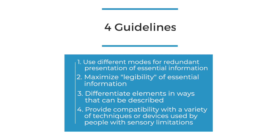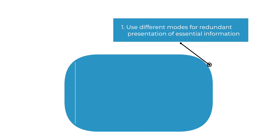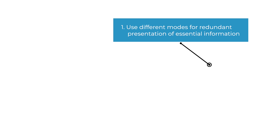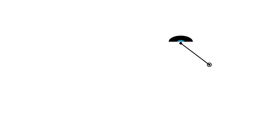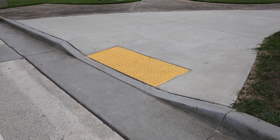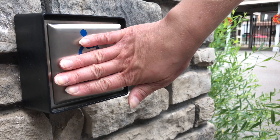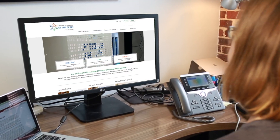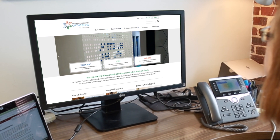Principle four contains four guidelines present in a design that follows this principle. The first guideline is to use different modes for redundant presentation of essential information. This includes things as simple as: do you have information represented in different formats? Do you have a tactile representation? Do you have imagery that makes sense? Do you have font with good contrast that is easy to perceive for anyone?